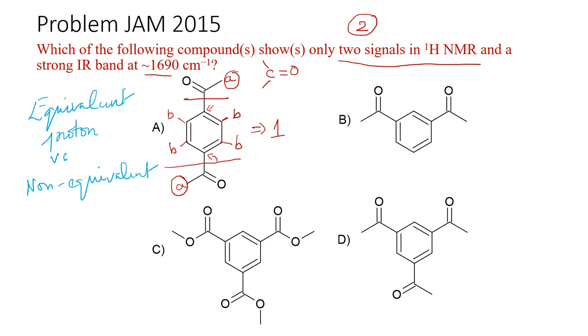Likewise, the two methyl groups are equivalent, so you get another signal. So there are two signals for compound A. A has two signals — A is one of the answers.